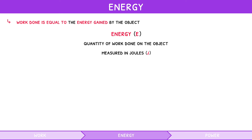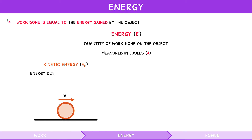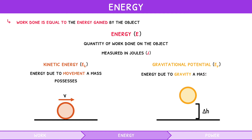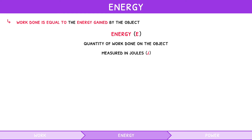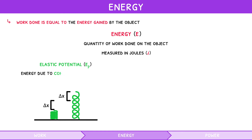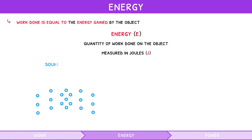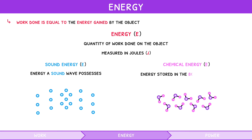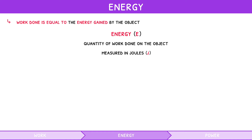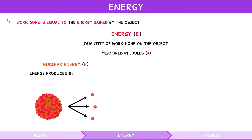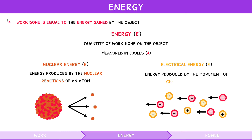There are several types of energy: kinetic energy — the energy due to movement a mass possesses; gravitational potential — the energy due to gravity a mass possesses; elastic potential — the energy due to compression or tension a mass possesses; thermal energy — the heat energy a mass possesses; sound energy — the energy a sound wave possesses; chemical energy — the energy stored in the bonds of molecules; nuclear energy — the energy produced by the nuclear reactions of an atom; and electrical energy — the energy produced by the movement of charged particles.